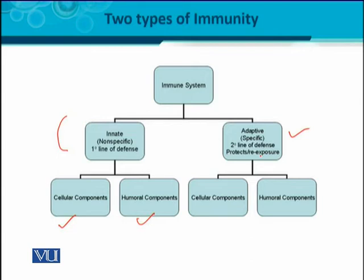The innate immune system has no memory — it is always there and always ready to protect. Like the innate system, the adaptive immune system is also comprised of two components: the cellular component and the humoral component. The humoral component consists of all secretions and secretory molecules produced from the cellular component. Both components together make up the immune system. Nature has provided these two lines of defense inside the body to offer more efficient protection against a variety of infections.